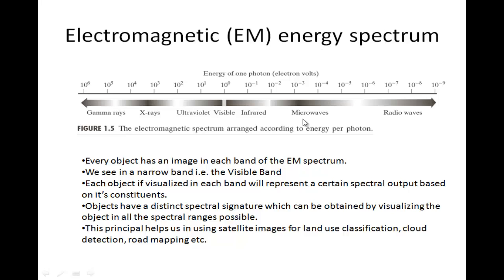Looking at the EM energy spectrum, we know that we are able to see in the visible range, but there are other bands available for imaging. Every object has an image in each and every band of the electromagnetic spectrum. So if I visualize a person in the ultraviolet, I will have a different kind of image. X-rays are generally used for bones visualization. Visualizing in the gamma band gives yet another image. Every object, when visualized in each band, will represent a certain spectral output based on its constituents. All objects generally have a distinct spectral signature, which can be obtained by visualizing the object in all spectral regions possible.